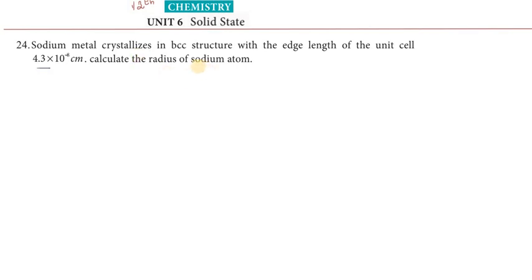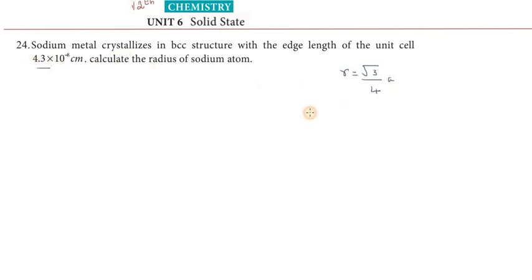For a BCC structure, the formula for the radius of an atom is R = (√3 / 4) × a. All we need is the value of a, the edge length, which we can directly apply.